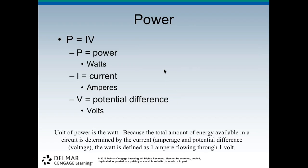Power: P = IV, where P is power measured in watts, I is the current in amperes, and V is the potential difference in volts. The total amount of energy available in the circuit is determined by the current (amperage) and potential difference (voltage). The watt is defined as one ampere flowing through one volt.